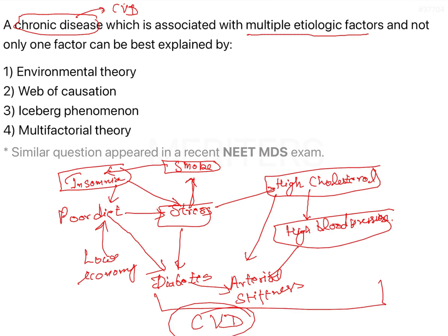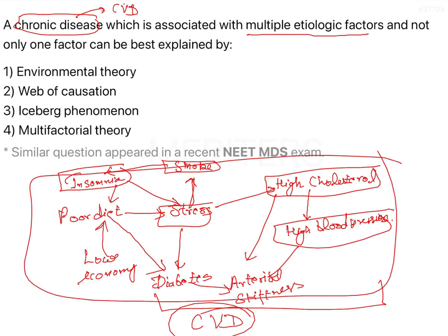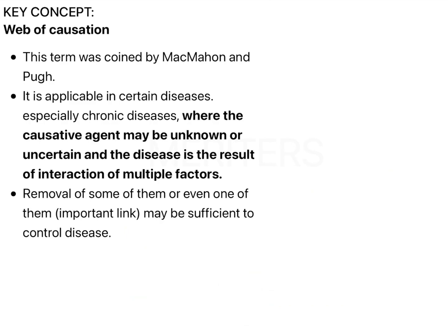Cardiovascular disease is a chronic disease with a lot of interlinked factors that lead to it. There are certain important key factors — if you remove those in between, you can stop the disease itself. There is an interaction of all these factors, and as you can see, it has become a web. These are the etiologic factors, and that is known as the web of causation.